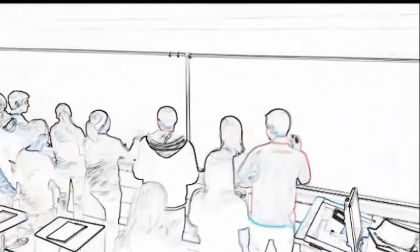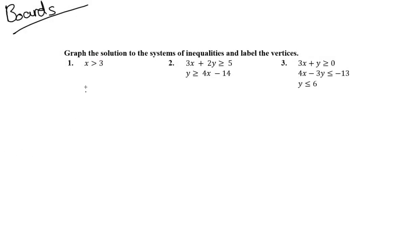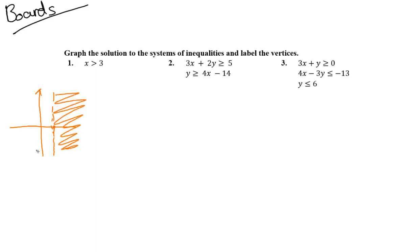Let's give you a few to try on your own. Number one is a review, number two is a system where you'll find one vertex, and number three has multiple vertices. For problem one, there's only one inequality: x > 3. We graph x = 3 as a dashed vertical line and shade to the right since x is greater than 3.